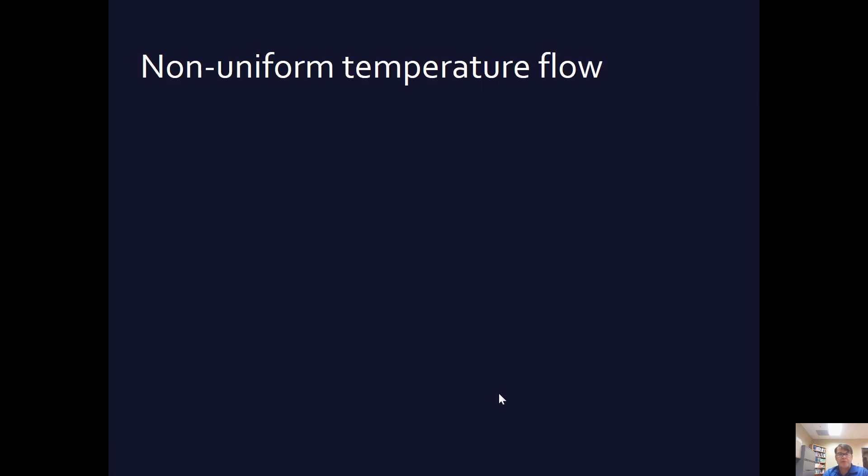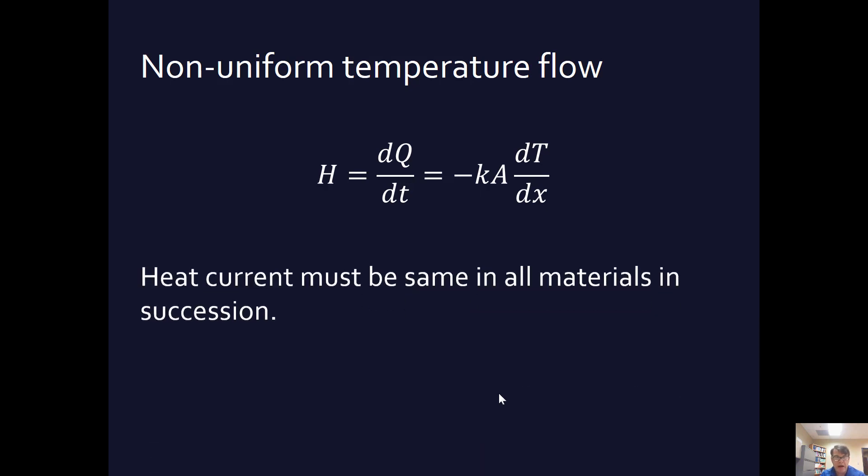Now, what if the temperature is not flowing uniformly? Well, then we're going to have to do a little calculus. We're going to have to go down to the infinitesimals. So heat equals the change in Q, dQ/dt per time, equals the negative kA dT/dx, where dT/dx is the change in temperature per time. Heat current must be the same in all the materials. That is, that rate is going to be the same through all the materials in succession.